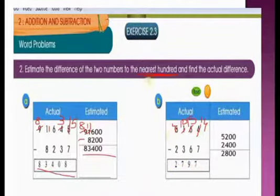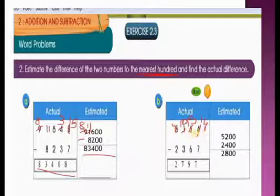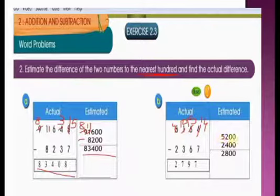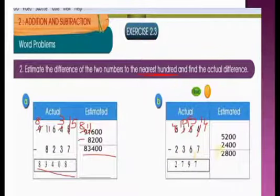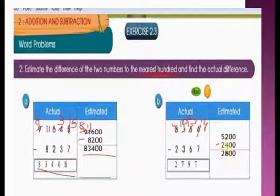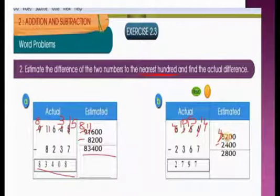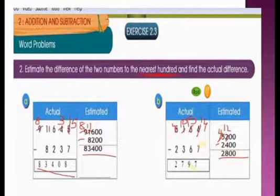Now we have to find the nearest 100 estimate. Is 164 nearest to 100 or 200 children? Yes, it is nearest to 200, so we write 5,200. And 2,367: is 367 nearest to 300 or 400 children? Yes, it is nearest to 400, so we write 2,400. Finding the difference: 0 minus 0 is 0; 0 minus 0 is 0; 2 is smaller than 4, so borrow from 5 — it becomes 4 and this becomes 12. 12 minus 4 is 8; 4 minus 2 is 2. Estimated answer: 2,800.